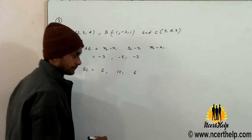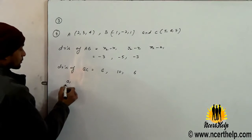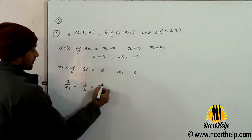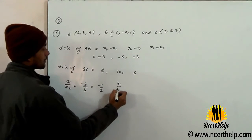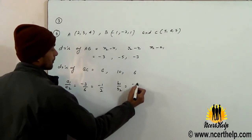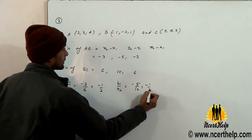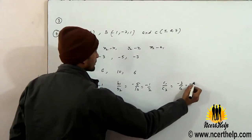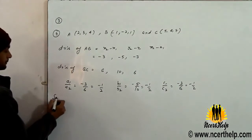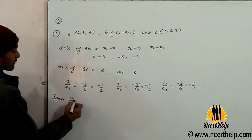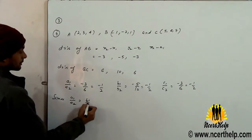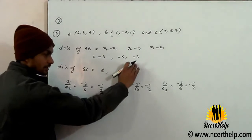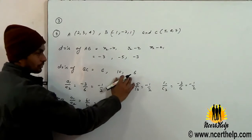Parallel. From A1 upon A2, A1 upon A2 is minus 3, that is minus 1 by 2. B1 upon B2 is minus 5 by 10, which is minus 1 by 2. C1 upon C2 is also minus 1 by 2. Since A1 upon A2 is equal to C1 upon C2, for the first line the notation is A1 B1 C1, A2 B2 C2.